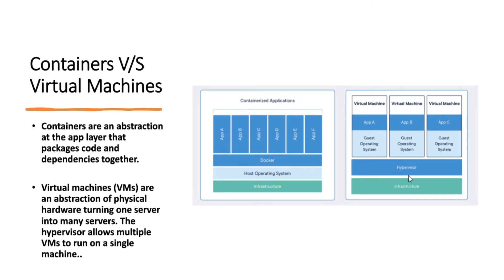In the virtual machines model, we have infrastructure, then a hypervisor layer on top of it. On the hypervisor we create multiple virtual machines, and each VM gets its own separate OS — it could be Windows or Linux. Each VM has a different or similar OS, and then we run our applications on that particular OS.